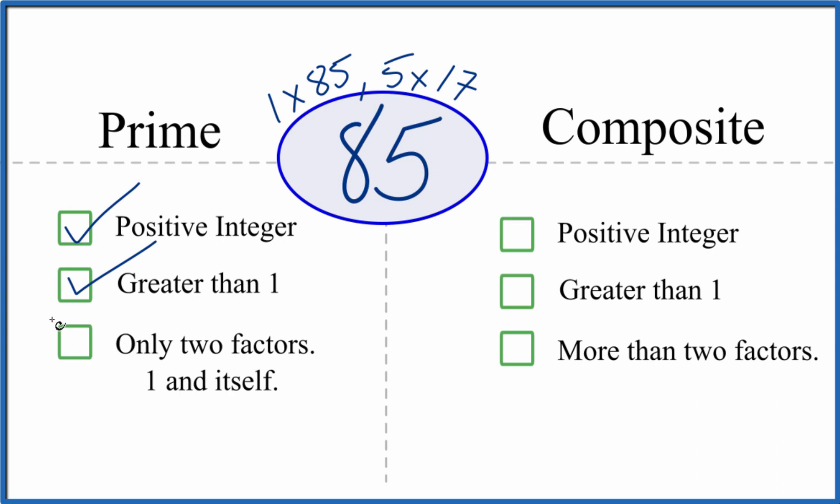So that doesn't work. 85 is not a prime number. But is it a composite number? Well, we have a positive integer and it's greater than 1. Are there more than two factors? One, two, three, four factors. So 85 is a composite number.